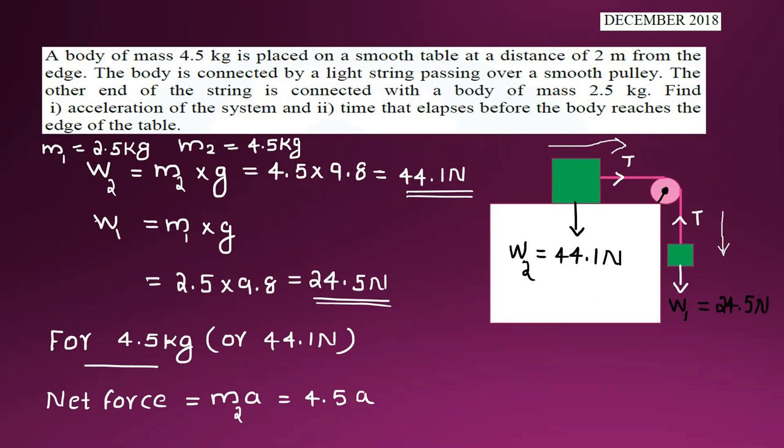The next problem: a body is connected by a light string passing over a smooth pulley, at a distance of 2 meters from the edge of a table. The other end of the string is connected to a body of mass 2.5 kg hanging in the air. Find the acceleration of the system and the time that elapses before the body reaches the edge of the table.